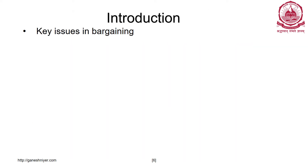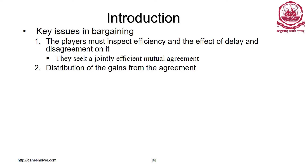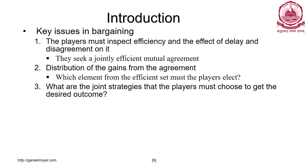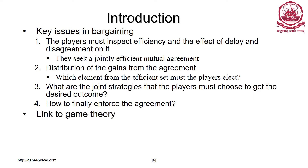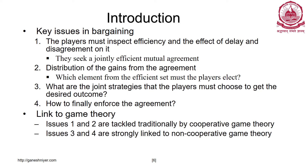Key issues in bargaining include: players must inspect efficiency and the effect of delay and disagreement on it; they want a mutually jointly efficient agreement; distribution of the gains from the agreement; which element from the efficient set must the players select; what joint strategies must players choose to get the desired outcome; and how to finally enforce agreement. Issues 1 and 2 — efficiency and distribution of gains — are modelled by cooperative games, while joint strategies and enforcement link to non-cooperative games.